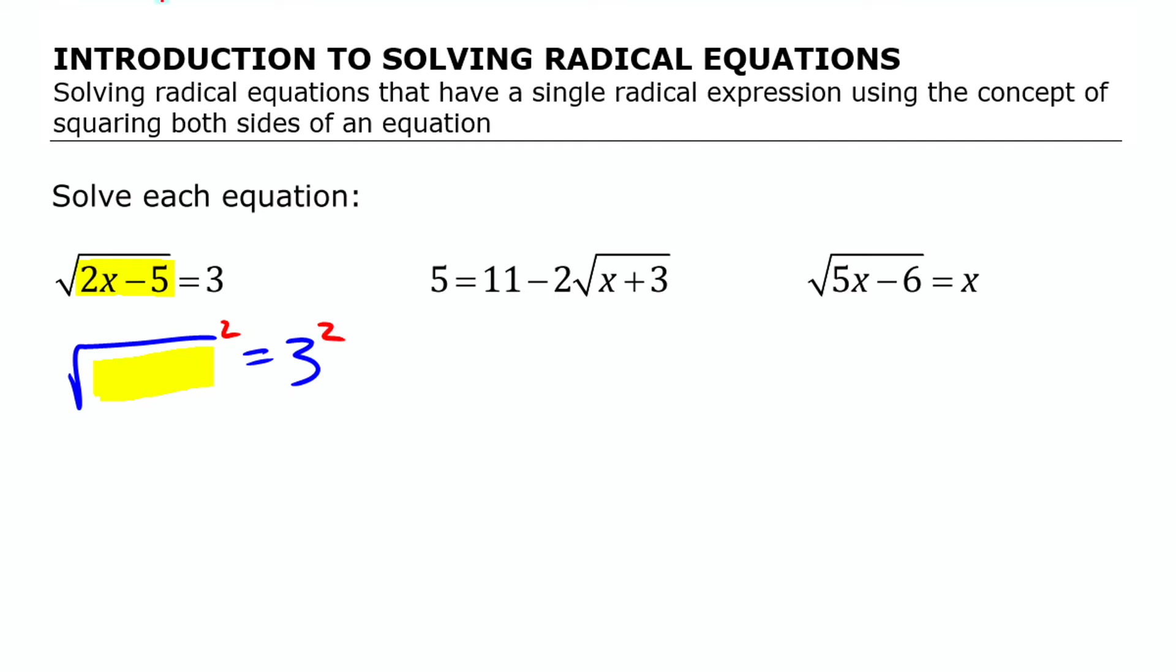If I square both sides here, squaring this square root, those are inverse operations. If I do that, all I'm going to have on the left side is that yellow thing there. On the right, I'm going to have 9. That yellow thing is just 2x minus 5. Whatever it is inside the square root, if I square both sides, it eliminates that square root sign. That's the key to the technique we're using here.